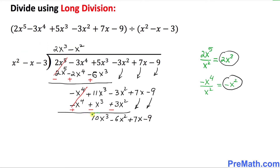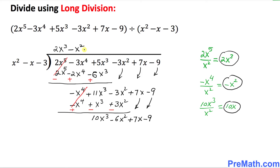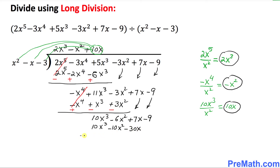Now look at the leading term 10x³. We divide 10x³ by the leading term of the divisor, x², and simplify to get 10x. We write this positive 10x on the top. We multiply 10x by all three terms of the divisor, giving us 10x³ minus 10x² minus 30x.